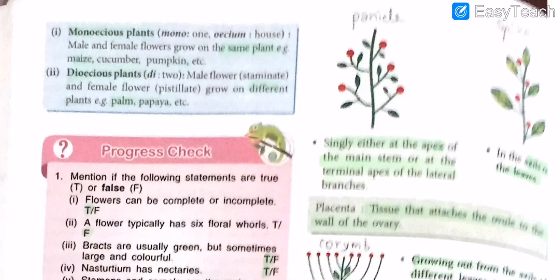The second type is dioecious — meaning 'two houses' — where staminate (male) flowers and pistillate (female) flowers grow on different plants. Examples are palm and papaya. In monoecious plants one house holds both, while in dioecious plants male and female flowers grow on separate plants.